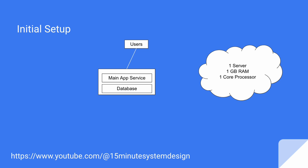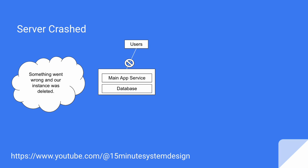In the beginning, we just have one GB of RAM and one core processor, which is enough to handle a few visits per day. But one day, we start getting complaints from users that the website is not available. We look at the server and find out that our instance has been deleted due to some issue — probably our server crashed and the machine became part of a periodic unused-machines cleanup job.